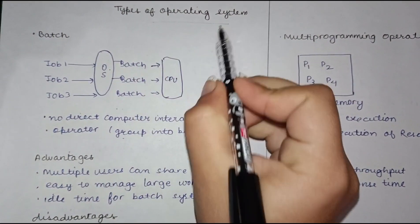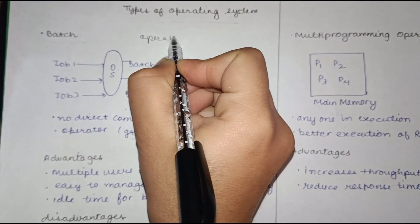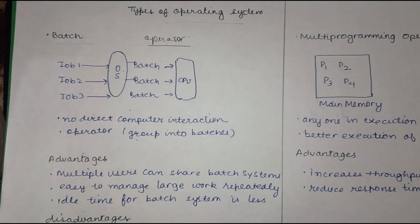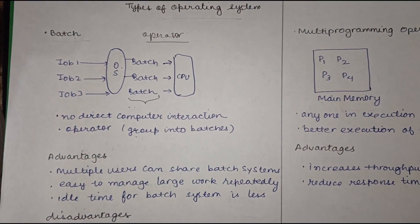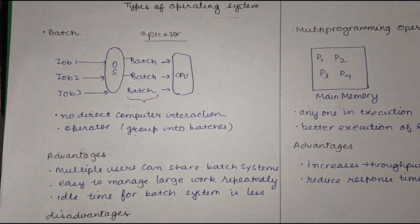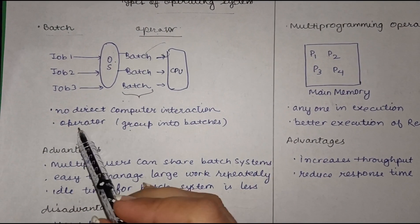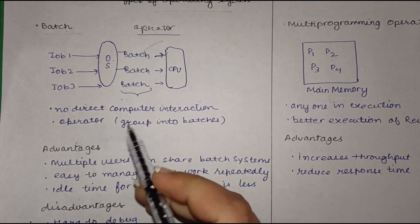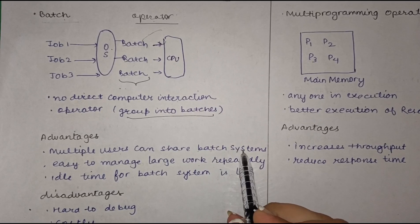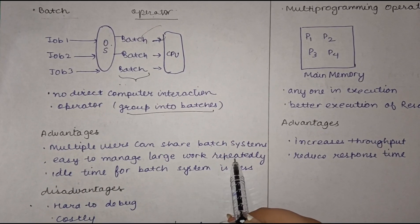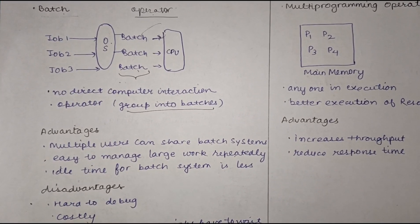Moving to the types of operating systems, the first is the batch operating system. In batch processing, an operator takes jobs and groups them into different batches — a batch being a group of tasks similar in nature. These batches are given to the CPU for execution. There is no direct user-computer interaction because the operator groups jobs into batches. Advantages include multiple users sharing the system and easier management of large workloads.